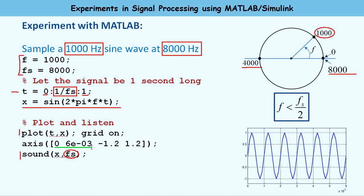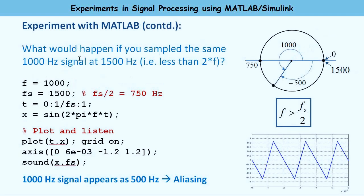This experiment confirms that if we obey the sampling theorem, the frequency of the digital signal is the same as the analog signal. We set the analog signal frequency through computation — we're not sampling a physical analog signal, just computing the digital signal — so we'll only be listening to the digital signal. Next, we violate the sampling theorem. We again take the 1 kHz signal but now sample it at 1500 Hz instead of 8 kHz. Since 1.5 kHz is less than 2 times 1 kHz, we disobey the sampling theorem.